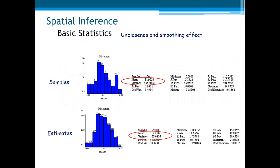Now let us see the statistics of the estimates and compare with the statistics of the samples. This is the statistics of the samples, and the statistics of the 22,000 estimated points. Let us look at the mean: the mean of the samples is 11.9, and the mean of the final estimated points is 12.2, which are quite similar.